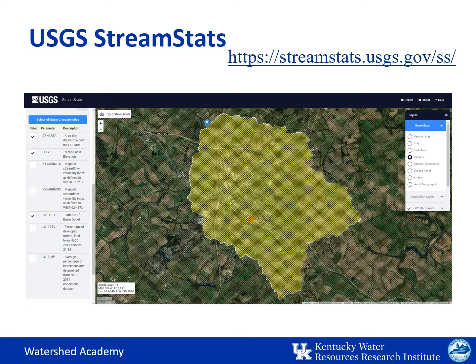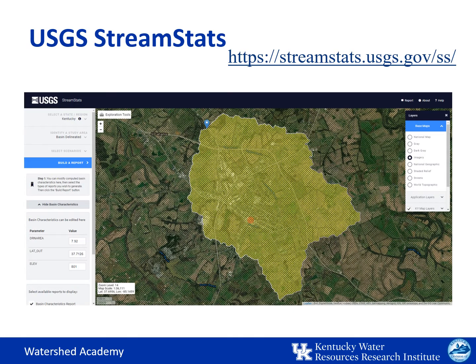Here you can see that you have the option to pick drainage area, elevation, two flow variability indices, the latitude of the outlet, and two measures of impervious area. By selecting what you want and clicking continue, it will immediately give you the feedback on the basin characteristics you selected. If you scroll down and hit continue again, it will then build your report.